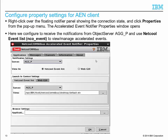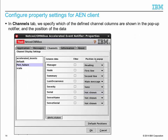To configure AN client properties, right-click over the notifier panel, then click properties from the pop-up menu. Here we configure it to receive notifications from object server agg and use ncu-p and ncu-event to view and manage accelerated events. This screenshot shows what columns are shown in the pop-up notifier and their position.